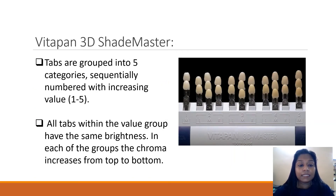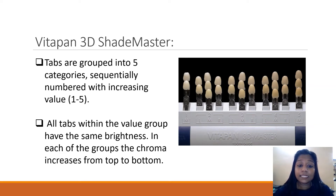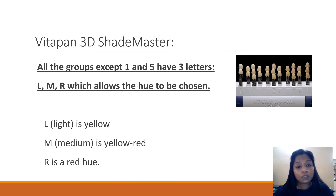In the Vitapan 3D Shade Master, the tabs are grouped into 5 categories with increasing value from 1 to 5. All tabs within the same group have the same brightness, and within each group, the chroma increases from top to bottom. All groups except 1 and 5 have letters L, M, and R — where L is yellow, M is yellow-red, and R is the red hue, referring to the different hues available.